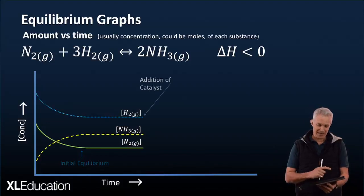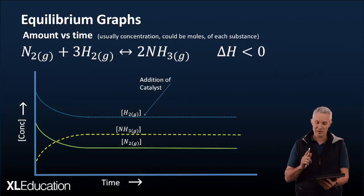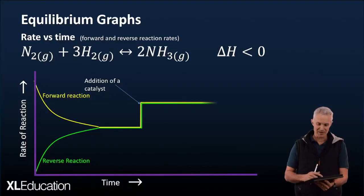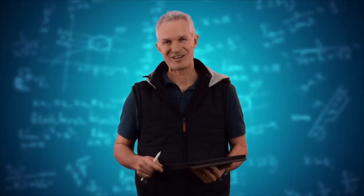So in fact, adding a catalyst doesn't change the amounts of the substance, but it does change the rates. And have a look at what happens to the rate. Remember, neither is favoured, so they both go up at the same time. Not one is more than the other. They both go up together. That's what happens when you add a catalyst. So I hope that's a helpful overview for you. Once again, practice is the way to get used to what these graphs do. All the best. Have fun. Cheers.